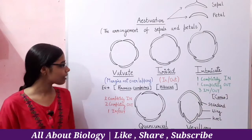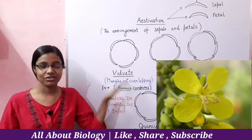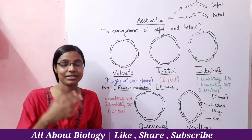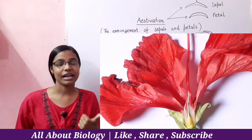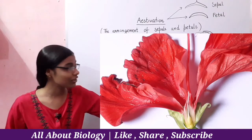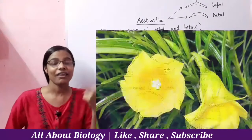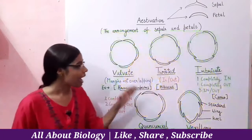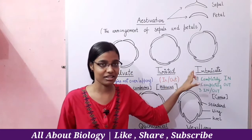An example of Twisted Estivation is Brassica campestris. We have also studied Twisted Estivation in Hibiscus flowers. Now let's talk about the third type, Imbricate Estivation.